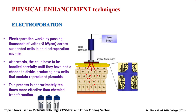Electroporation, also called electropermeabilization, is a method in which a brief period of high-voltage electric discharge is used, which creates permeability in the cell wall and renders it permeable to DNA. This has revolutionized the bacterial transformation process. It works by passing some thousands of volts — around 8 kilovolts — across the suspended cells in the electroporation cuvette. A pulse electrode through a power supply is applied, and this creates pores or holes in the cell wall.